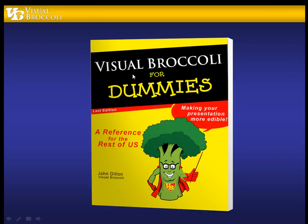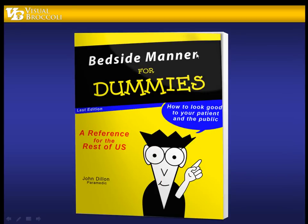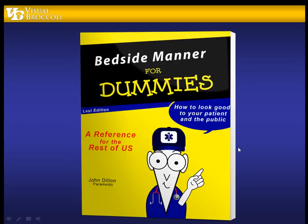I showed you a version of my Dummies book before — 'Visual Broccoli for Dummies' — in my previous tutorial. I kind of broke a little bit outside the Dummies mode but I have the popular font and my own character, so you have a lot of variables here. I originally created one for my presentation on bedside manner — 'Bedside Manners for Dummies' — and then I thought, why not customize the character further? So I created an EMS character that really speaks to my audience.